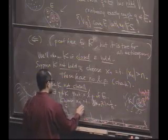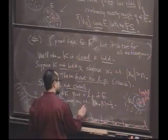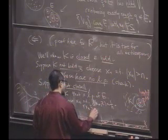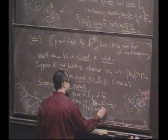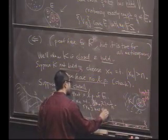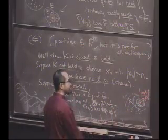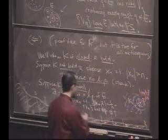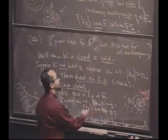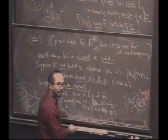And so this set, xn, has a limit point at P. And what's the other thing you'd have to show? Not only does it have a limit point at P, but you're trying to show this has no limit point in E. Why does this have no limit point in E?